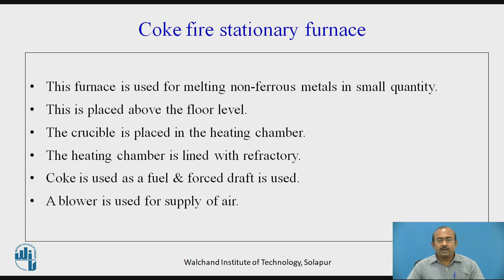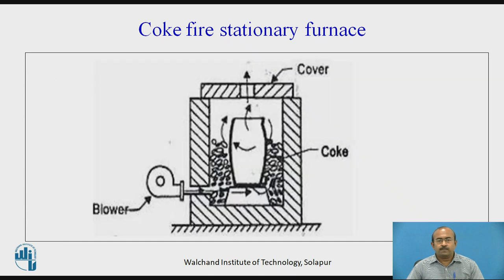The coke-fired stationary furnace is also used for melting non-ferrous metal in small quantities and is placed above the floor level. The crucible is placed in the heating chamber, which is lined with refractory. Coke is used as fuel and forced draft is used — a blower supplies the air. The diagram of the coke-fired stationary furnace is self-explanatory.